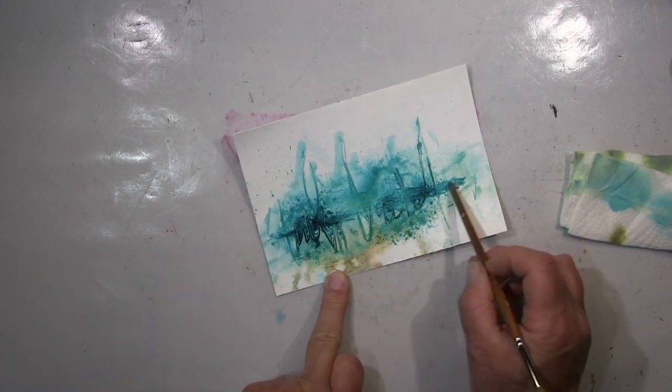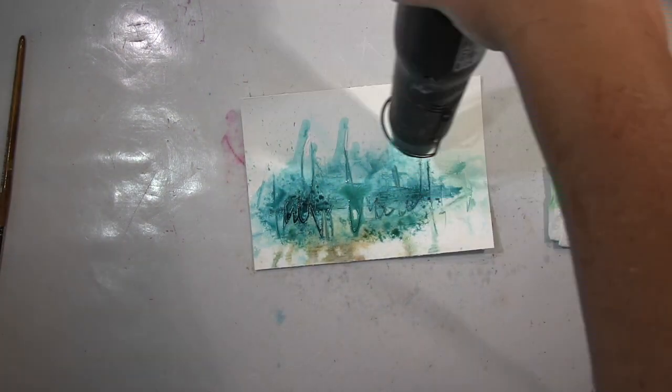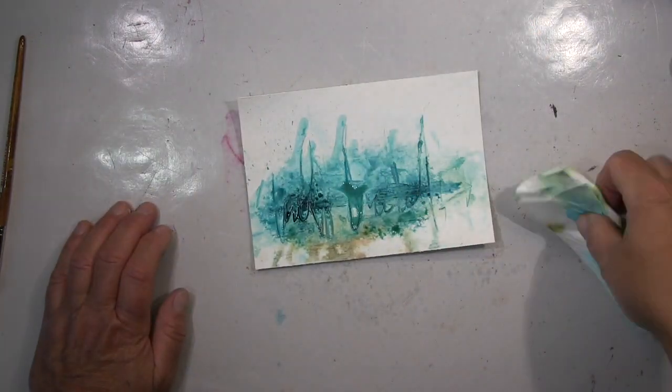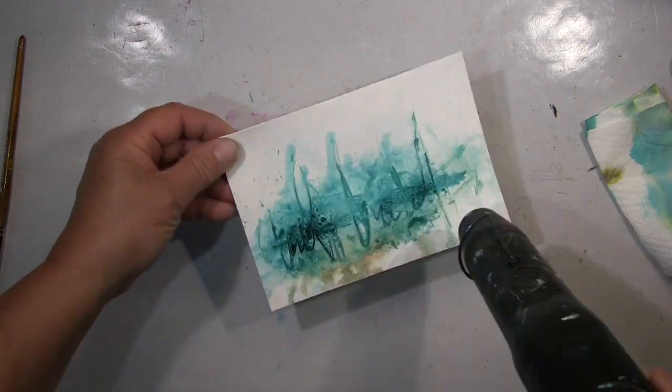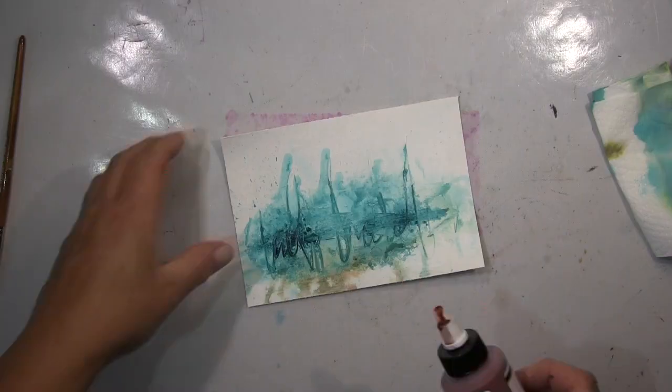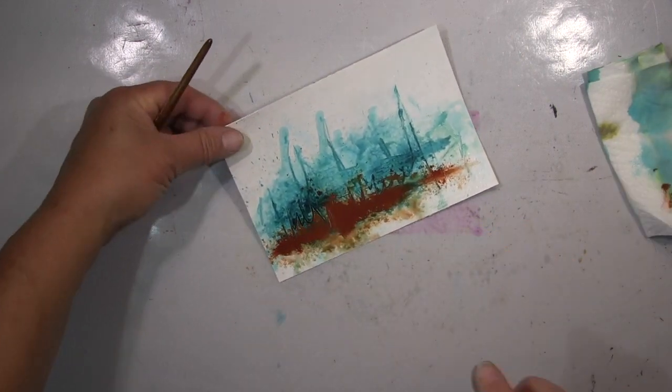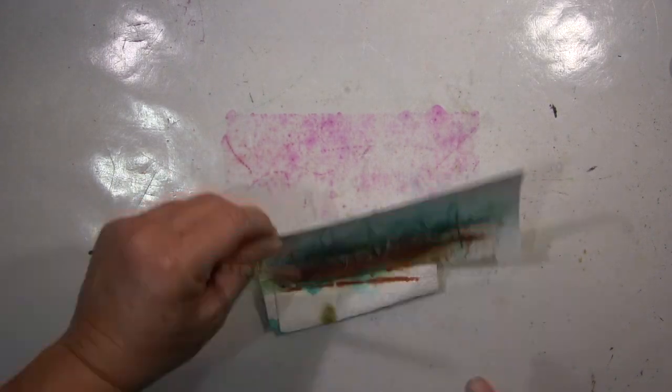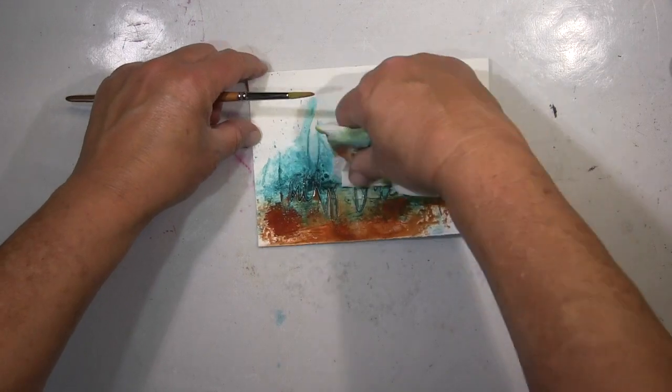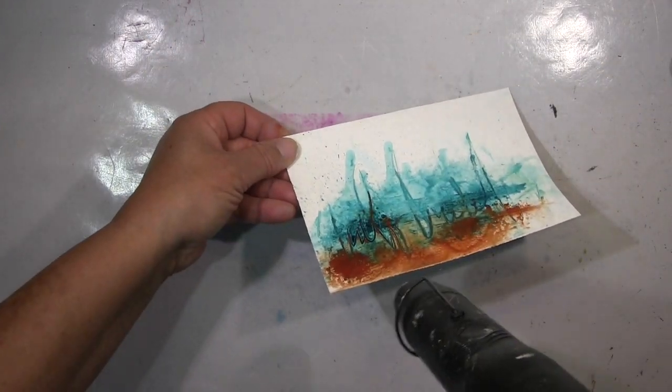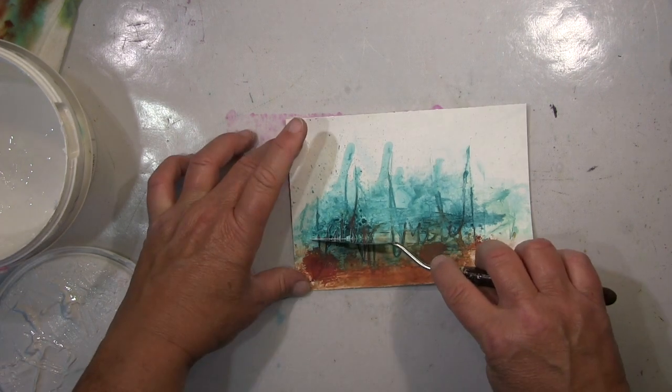You know, I started here with Distress Oxides, but they were so pale. And when you dilute them with water, they're getting even paler. And then I ended up using my Golden High Flows. And even when you thin them with water, the pigments are so strong. And I love them so much more. And of course, what I did here, different to my other maritime themes, I stayed pretty much abstract. So this is part, actually, of Ina Salisbury's four core challenge.